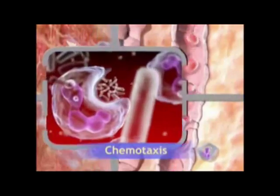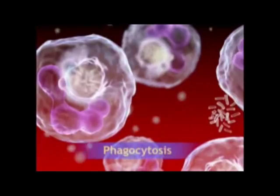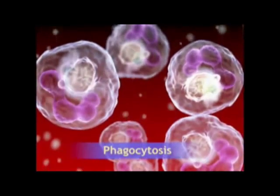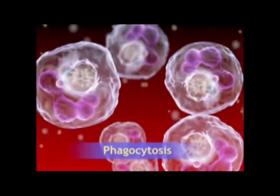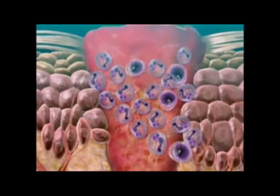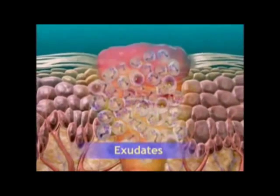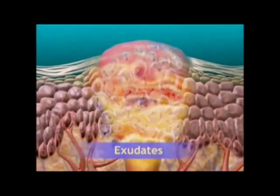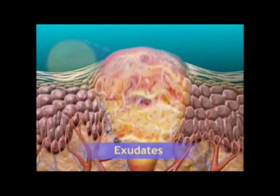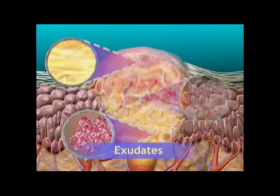The cellular stage culminates in the leukocytes engulfing and degrading the bacteria and cellular debris in a process called phagocytosis. Products of phagocytosis, along with plasma and blood cells, form exudates, which accumulate causing swelling and pain. Exudates are composed of serous fluid, red blood cells, fibrinogen, or tissue debris, and white blood cell breakdown products.